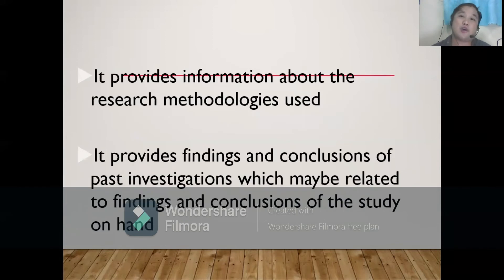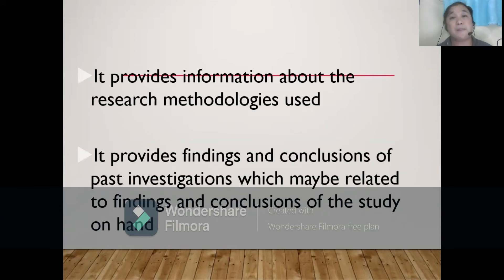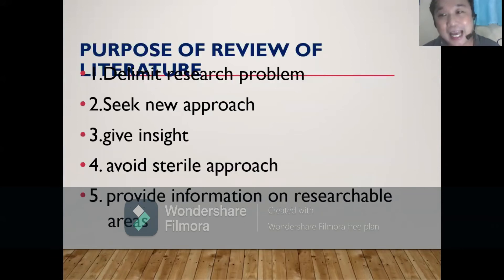Also, you can find them through your graduate school colleagues. The RRL also provides information about the research methodologies used. For example, when you are presenting your research design, you should have good related literature for that. It also provides findings and conclusions of past investigations, which may be related to the findings and conclusions of the study on hand.